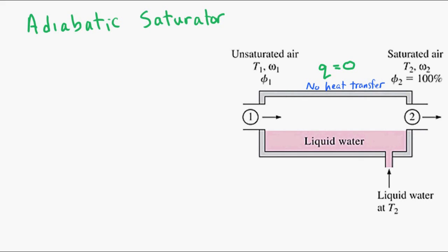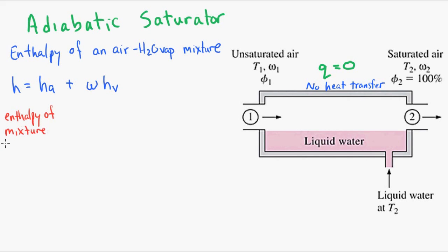To analyze the system, we first need to look at the enthalpy of an air-water vapor mixture, or the enthalpy of humid air. So the enthalpy is given by HA plus omega multiplied by HV, where H is the enthalpy of the mixture per unit mass of air. HA is the enthalpy of dry air, and HV is the enthalpy of water at the mixture temperature.